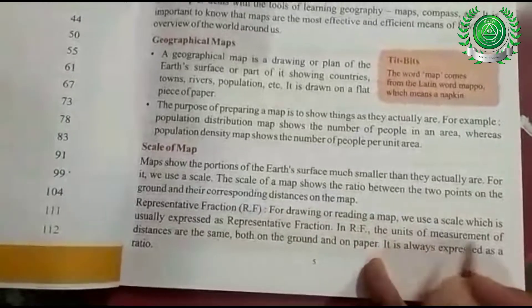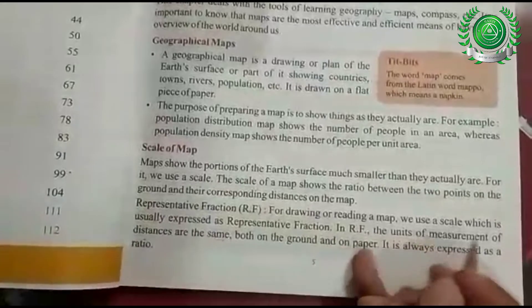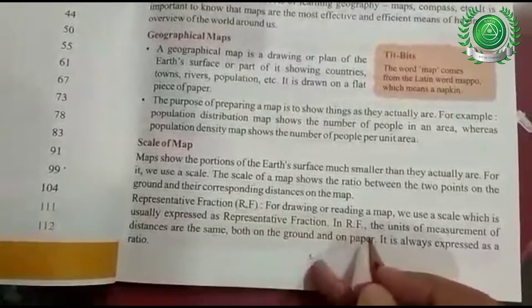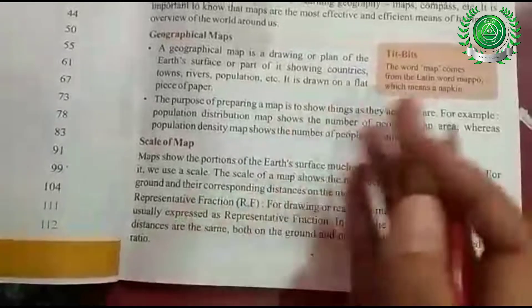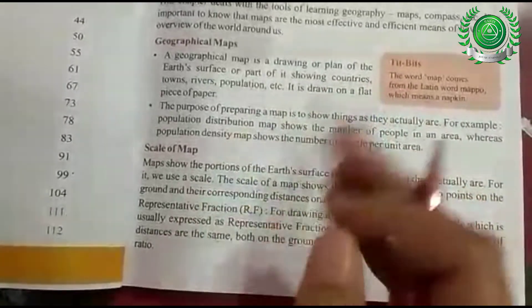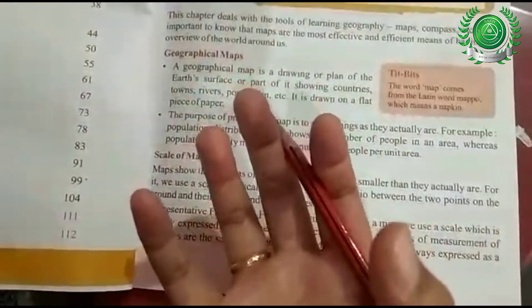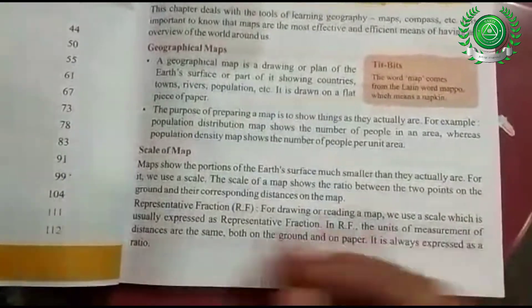The units of measurement of distance are the same, both on the ground and on paper. The map shows the entire earth on paper. It is always expressed as a ratio.